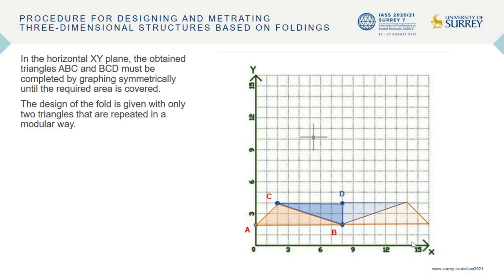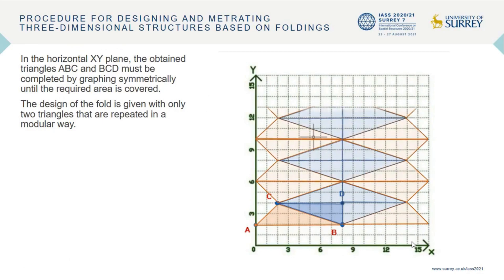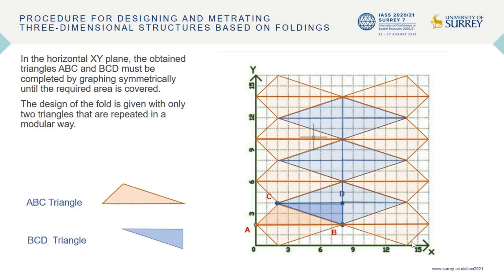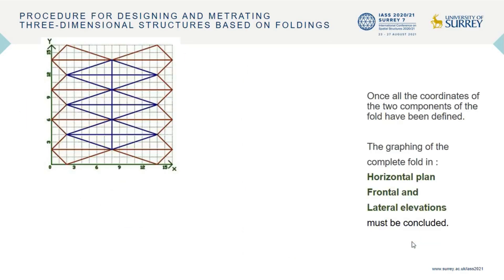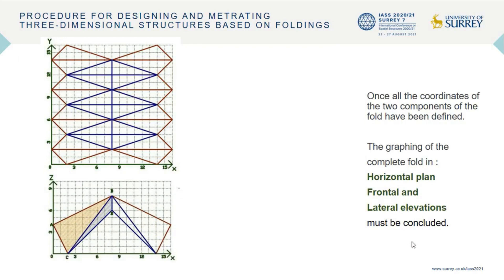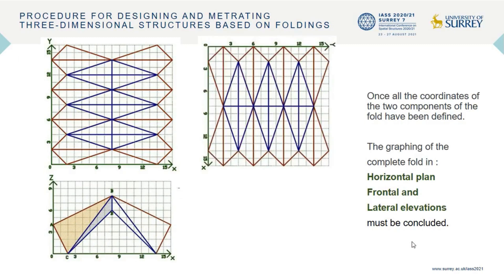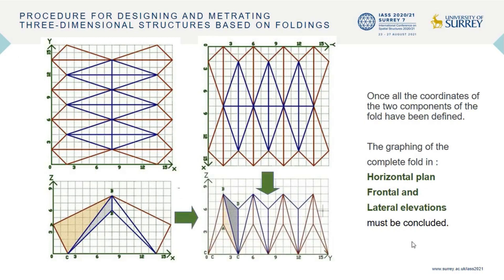In the horizontal xy-plane, the obtained triangles ABC and BCD must be completed by graphing symmetrically until the required area is covered. The design of the fold is given with only two triangles that are repeated in a modular way — ABC triangle and BCD triangle — once all the coordinates of the two components of the fold have been defined.